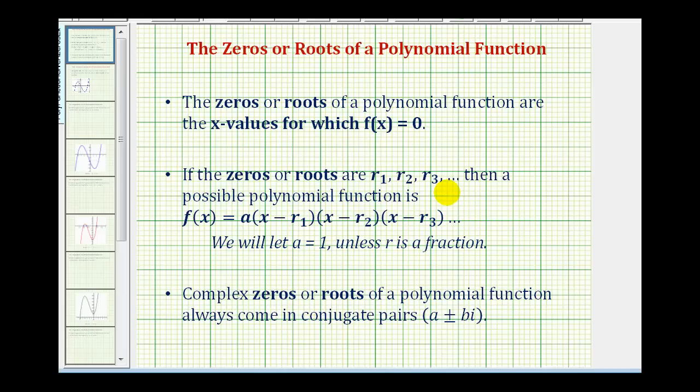If the polynomial function has complex zeros or roots, these always come in conjugate pairs.